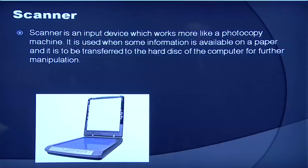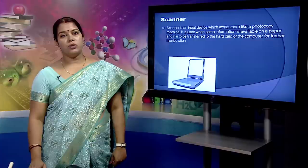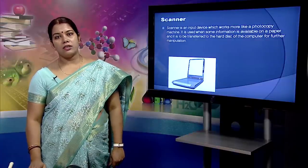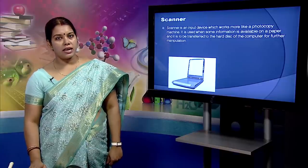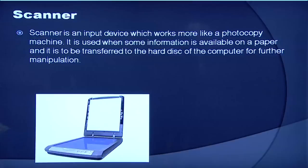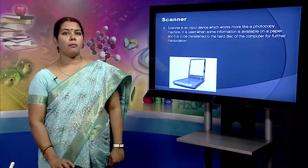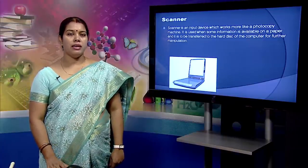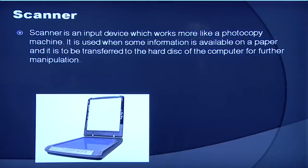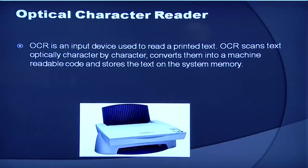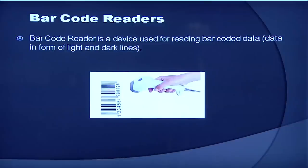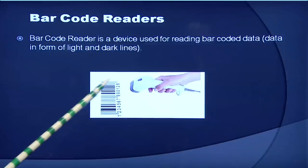We have optical scanners. These devices are used for automatic data collection and completely eliminate manual input of data. For example, the barcode reader is a special type of image scanner. An image scanner translates printed images into an electronic format that can be stored in a computer's memory, and with the right kind of software one can alter a stored image. Another example of a scanner is an optical character reader. We also have a barcode reader — a handheld device used for reading barcoded data, which is generally used in labeling goods, numbering books etc.